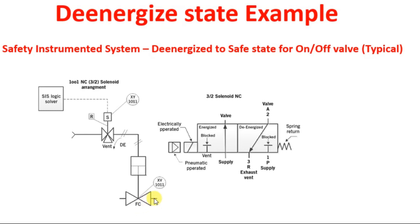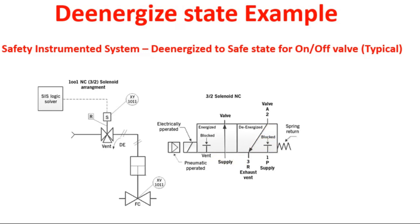This is the general working principle of a pneumatically operated actuator valve. According to the process conditions, the SIS logic solver will act and cut the power to the solenoid valve, making it move to the de-energized position. These positions are known as a spool. Internally, the spools are connected such that at one position the instrument air directly goes into the actuator body to keep it open; when power is disconnected, the spool moves internally to the exhaust port, venting the entire instrument air from the actuator body to the atmosphere to move the valve to the closed position.